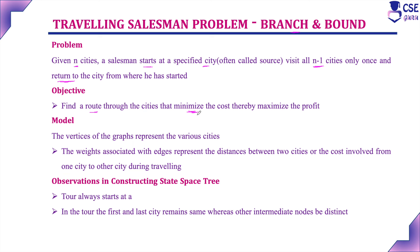This is a minimization problem. Our objective is to find a route through the cities that minimizes the total cost. In the branch and bound technique, we consider the lower bound value for the Traveling Salesman Problem. The vertices of the graph represent cities, and edge weights represent the distance or cost between two cities. We implement branch and bound by constructing the state space tree.